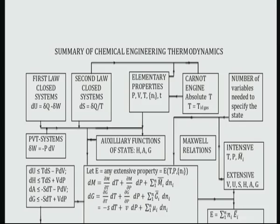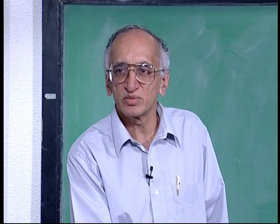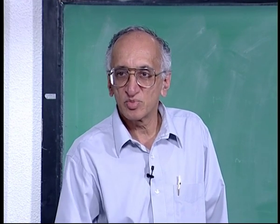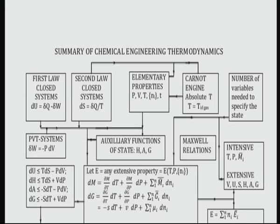Actually in principle what you do is take P, V, T, H, A, G, U and S means 8. Out of 8 any 3 variables are the independent variables. So there are 8 C 3 ways of writing every equation in thermodynamics in principle.